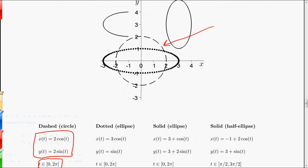Now if we look at the dotted ellipse, that's this one right here. That is centered at the origin, but it has an x radius of 3 and a y radius of 1. So there's our 3 for the x radius, and there's a 1 for the y radius. And again, we're going to let t go from 0 to 2π, because I want to go the whole way around and create the entire ellipse.